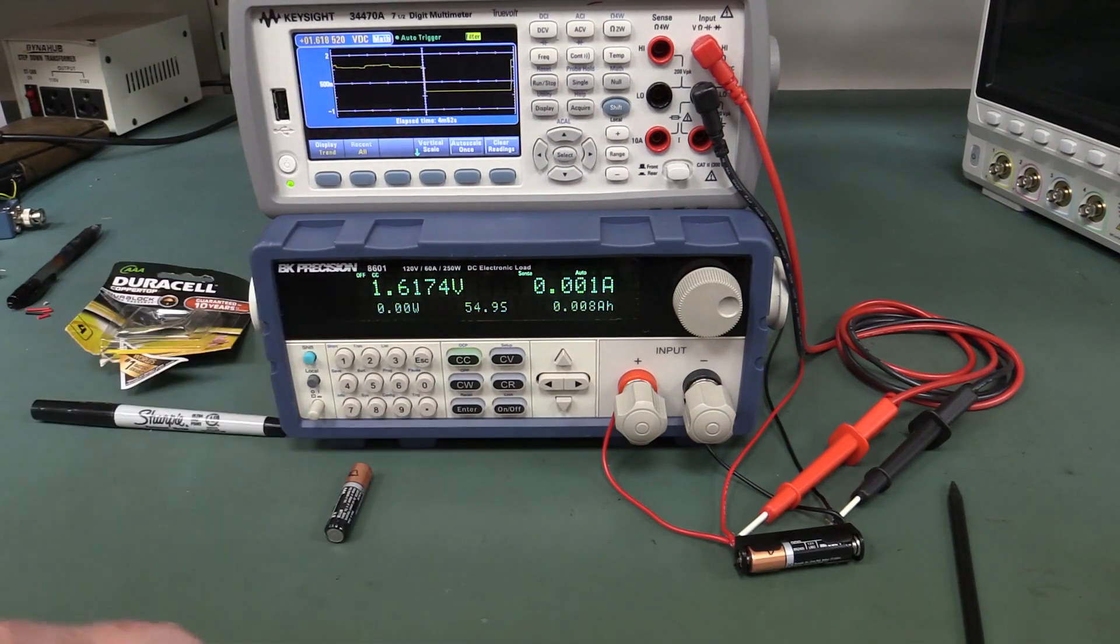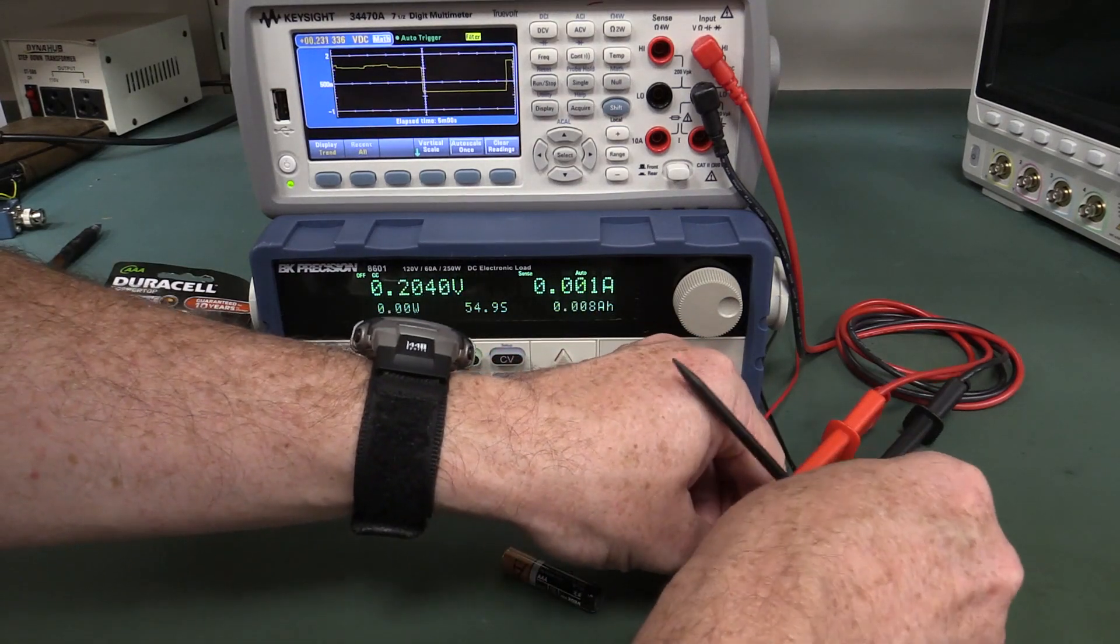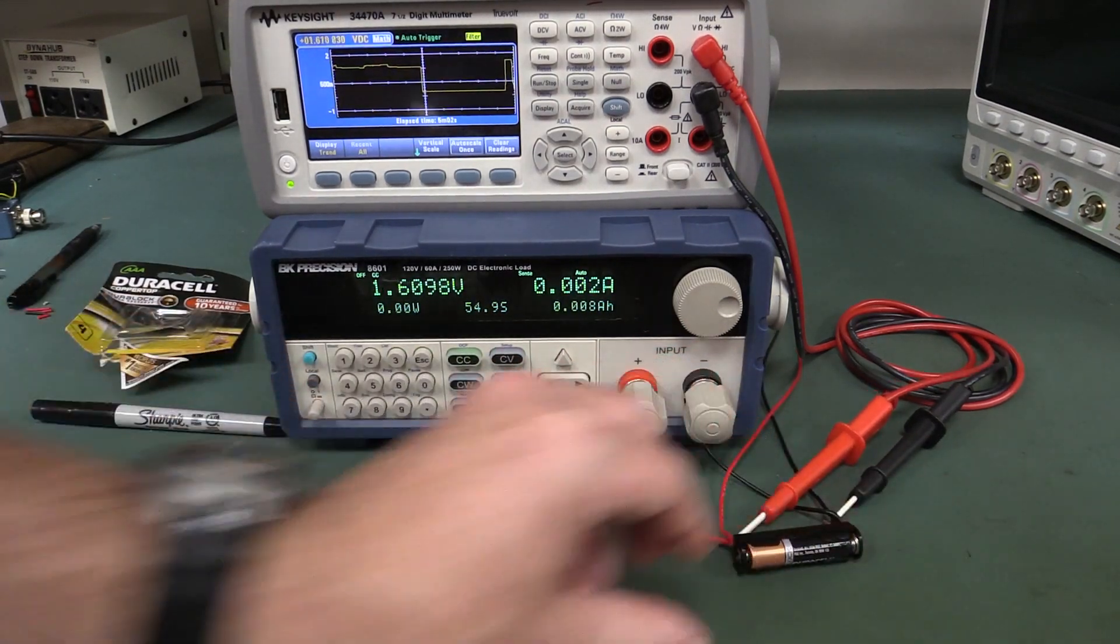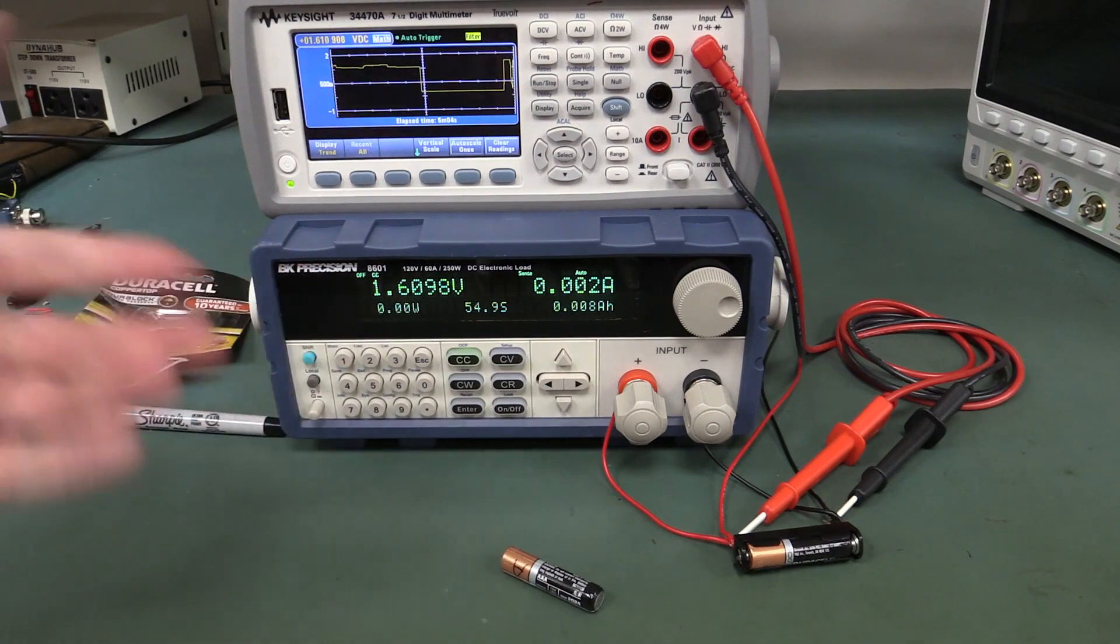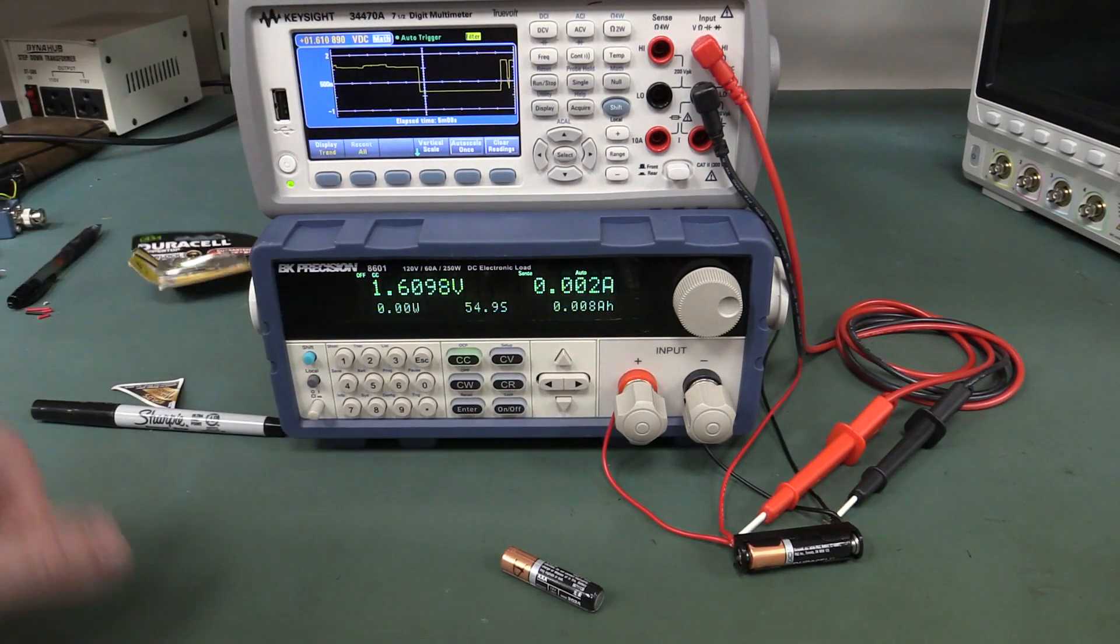Fresh battery straight from the pack: 1.6174 volts. Let's do the other one, battery B first, 1.6174 volts. Pretty darn close, identical batteries straight fresh from the pack.